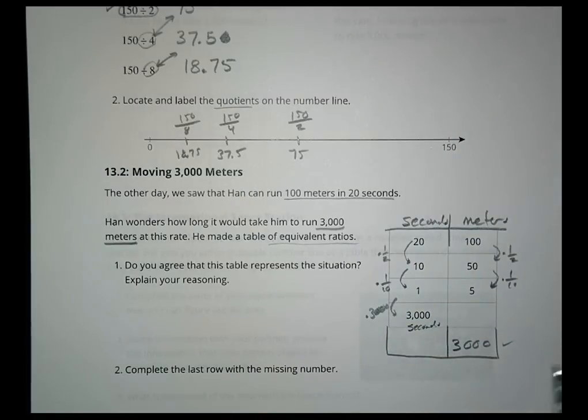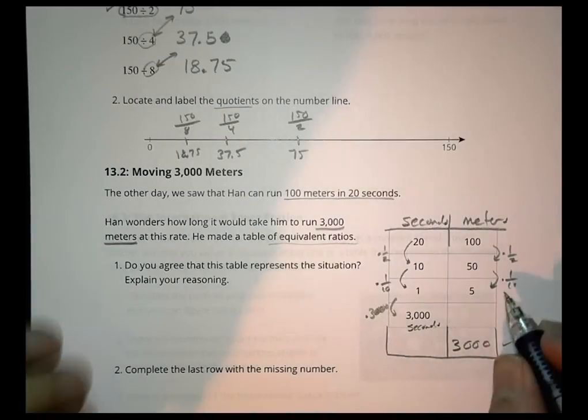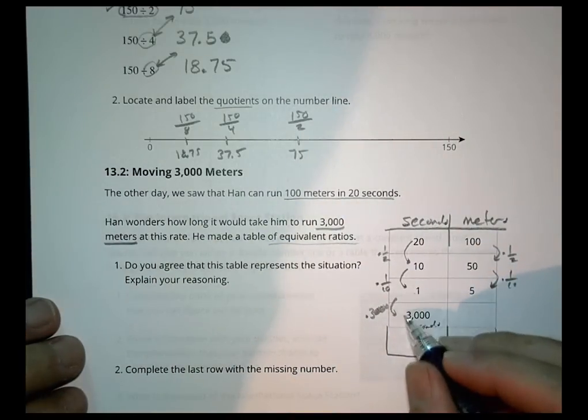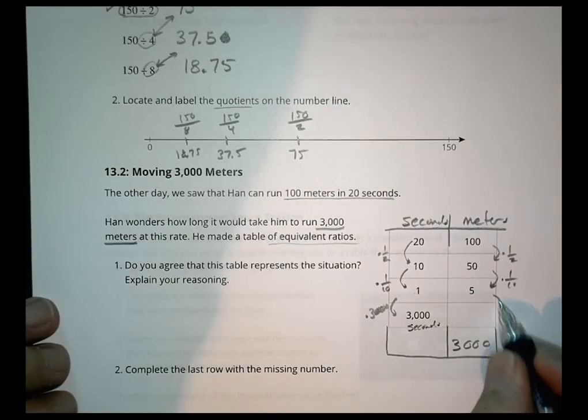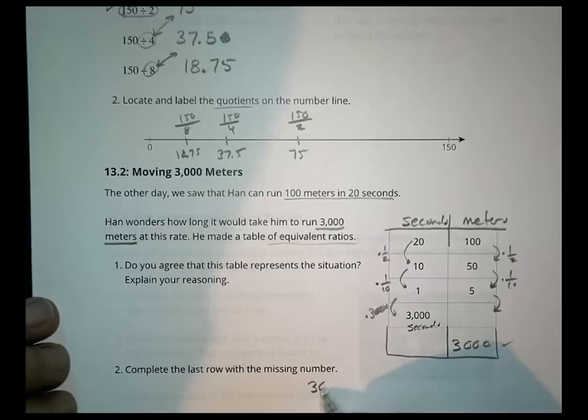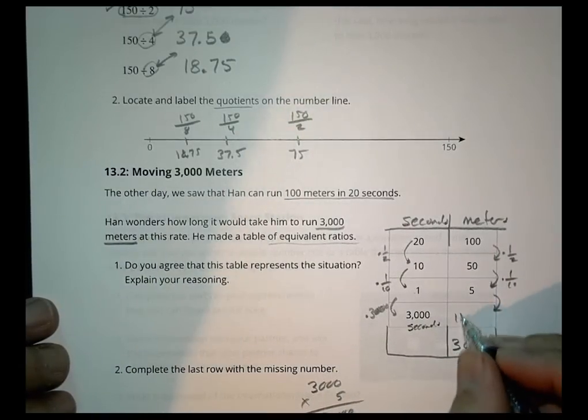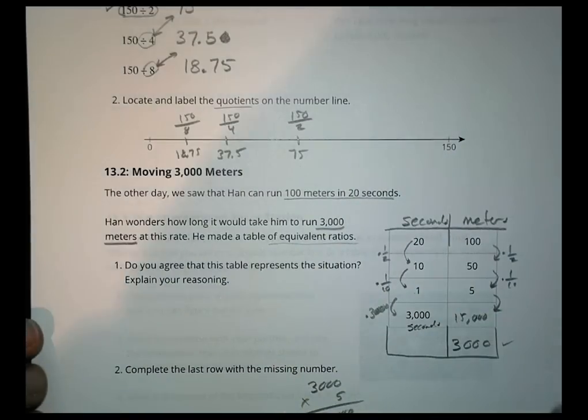He wants to know how long it takes him to run 3,000 meters at that rate. So in one sense, sure the table works. There's nothing wrong with the table. But it's not going to help him solve the question he has. His question is, how many seconds will it take to get to 3,000 meters? That's what goes into that box. This will give him a totally different number.